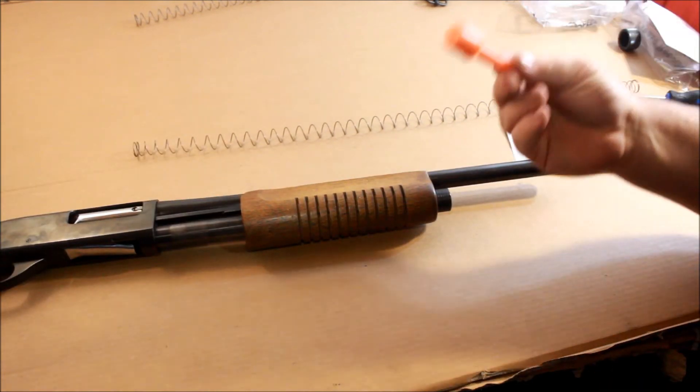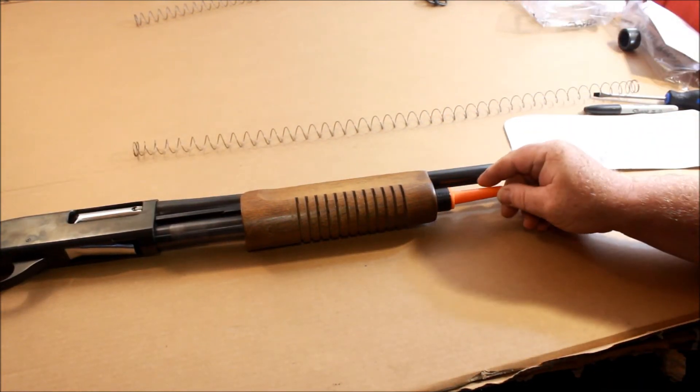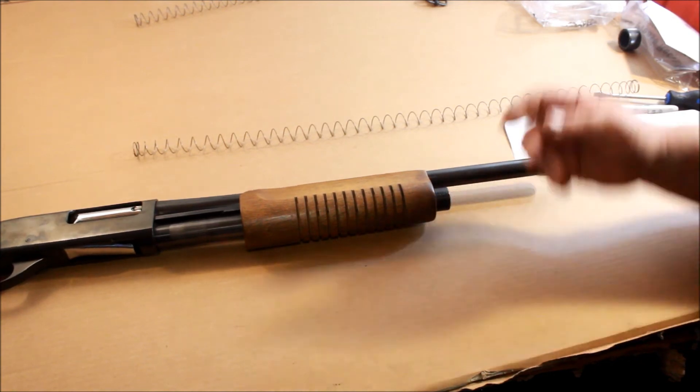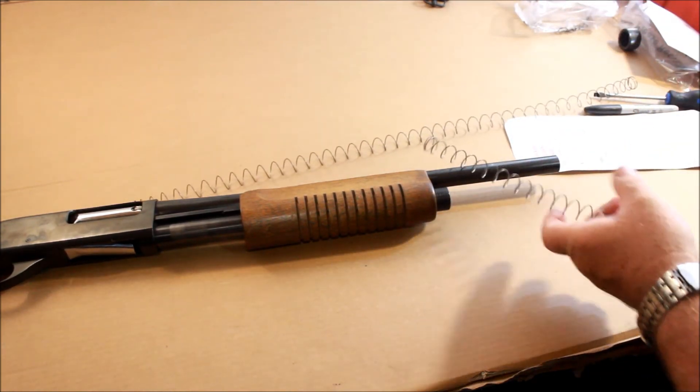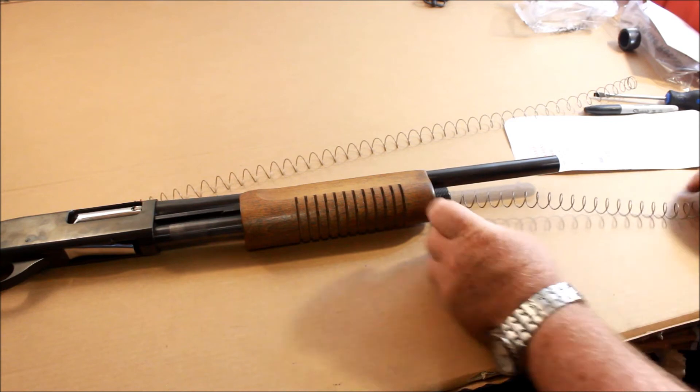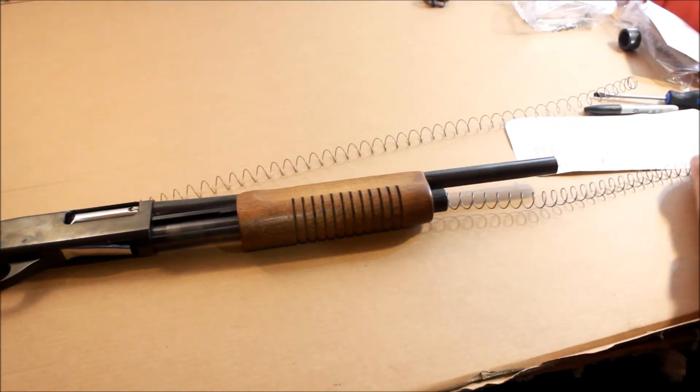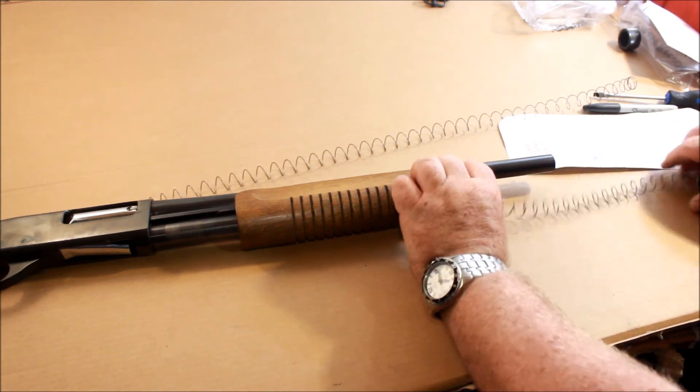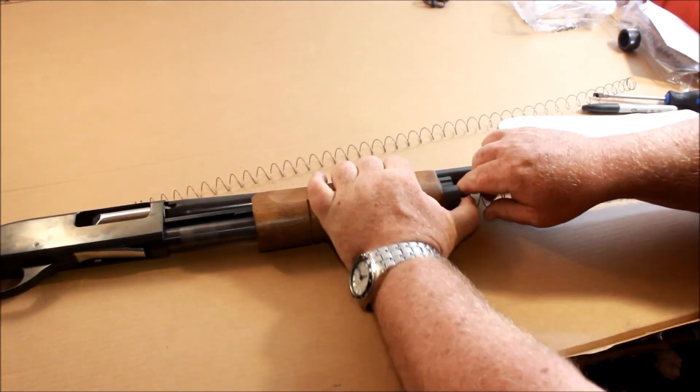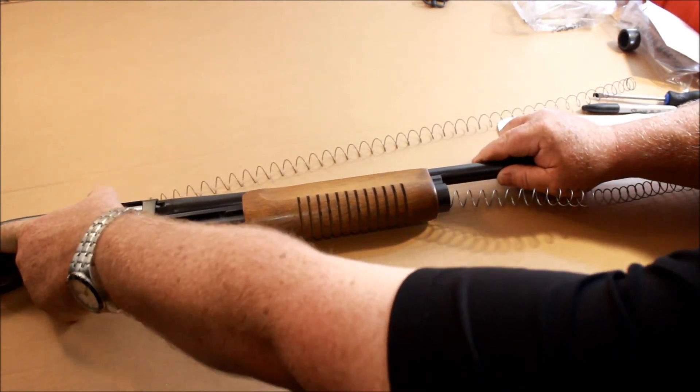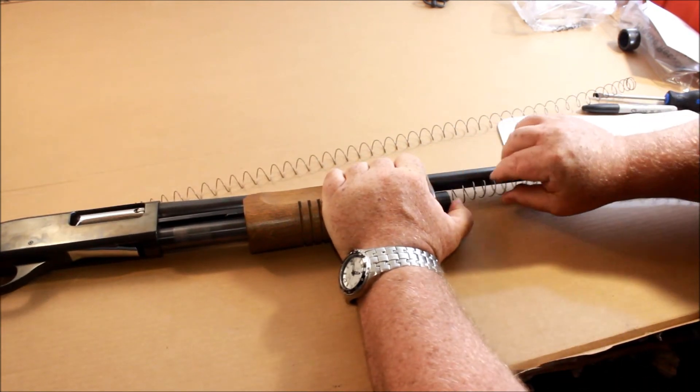Pretty straightforward. I'm going to put the follower in the big spring. Hopefully it's the right size and I don't need to shorten it, although from looking at it I need to shorten it. But let's just for fun just put it in there as best we can.